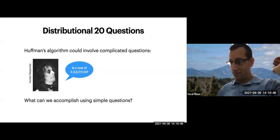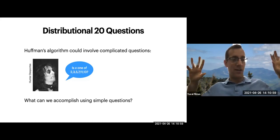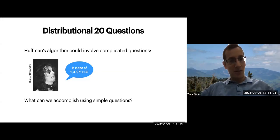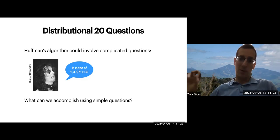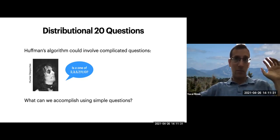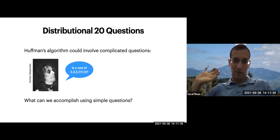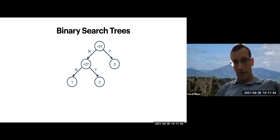Our main research question is: what can we do if we only restrict ourselves to simple questions? This is the source of the title '20 simple questions.' When is a question considered simple? One answer: a question is simple if you recognize it when you see it. For example, 'is x prime?' is not so simple, whereas 'is x at most five?' is pretty simple. Another answer: an ensemble of questions is simple if it's small - asking one of a hundred questions is simpler than one of a million.